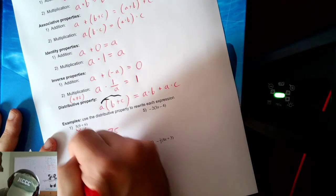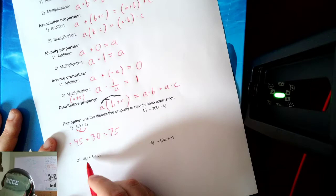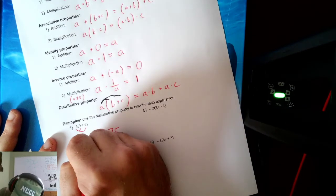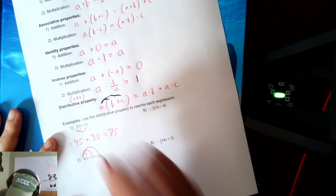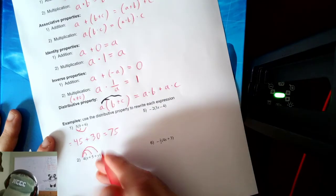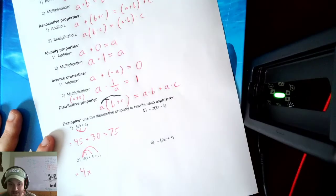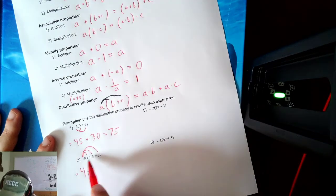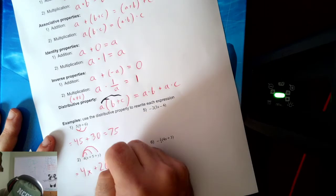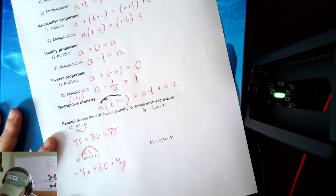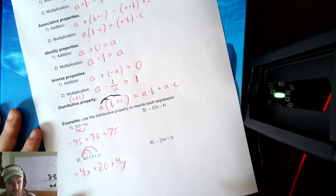The next example, we got to do 4 and we have X plus 5 plus Y. Well, I'm going to pick the 4 up and distribute it to everything in the parentheses. 4 times X, well, that's just 4X. 4 times X is 4X. 4 times 5, that's 20. Plus 4 times Y would be 4Y. Good.